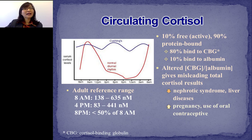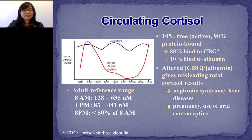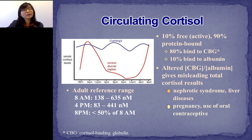Cortisol secretion follows a circadian rhythm, with the highest peak in the early morning and the lowest around midnight. Results from these two time points are most informative in diagnosing cortisol-related diseases. For example, in patients with severe Cushing's, their circadian rhythm is lost and cortisol levels constantly remain high. Only 10% of circulating cortisol is in free bioactive form, while 80% binds to cortisol-binding globulin (CBG) and the remaining 10% is albumin bound. Alterations in CBG and albumin can lead to inappropriate clinical diagnosis.